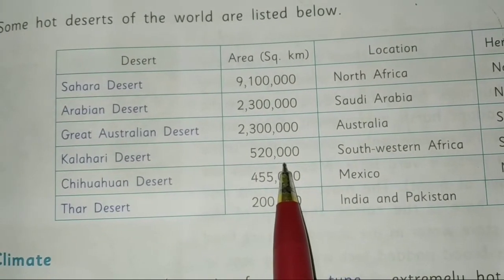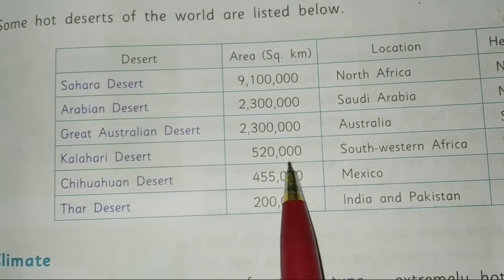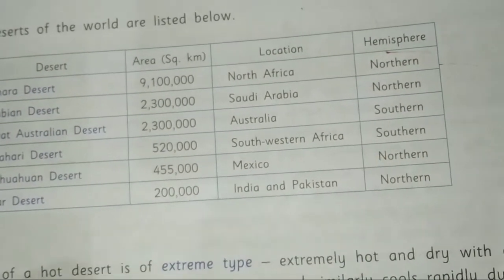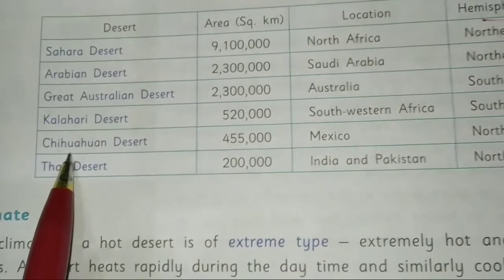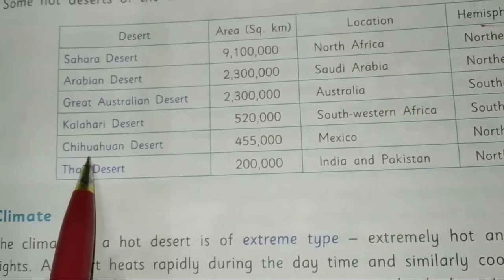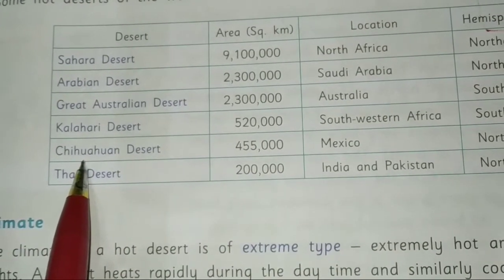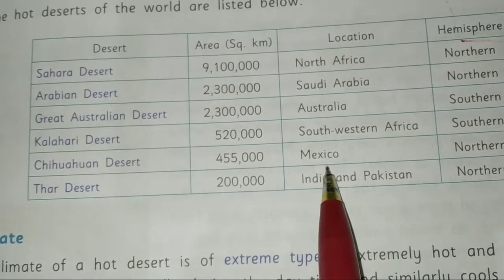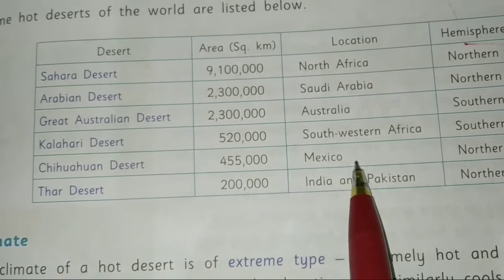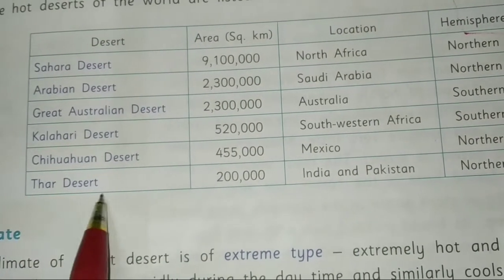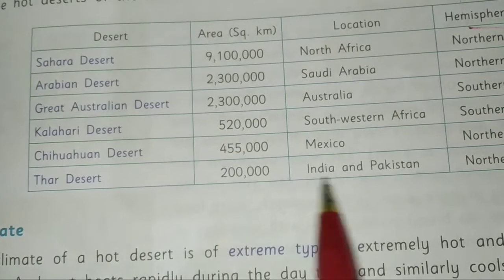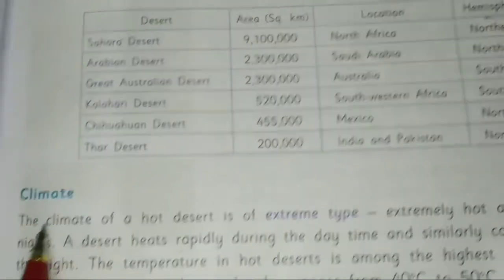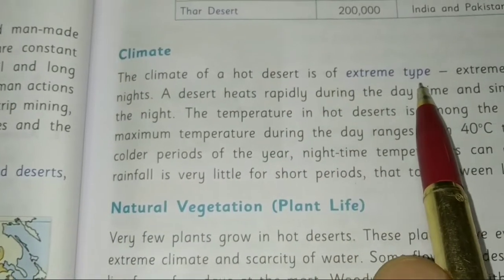Other notable hot deserts include the Kalahari Desert at 5.2 lakh square kilometers in South West Africa, the Chihuahuan Desert at 4–5 lakh square kilometers, and the Thar Desert at 2 lakh square kilometers along the India-Pakistan border.